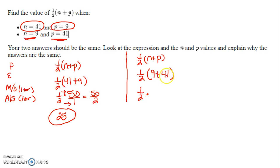So that's 1/2 times, what's 9 plus 41? 9 plus 41 is 50. What's 1/2 of 50? 1/2 of 50 is still 25.